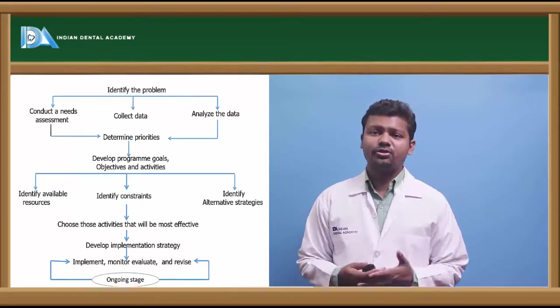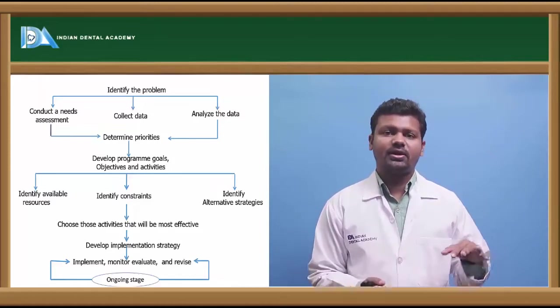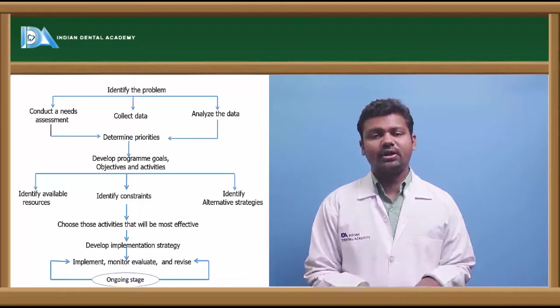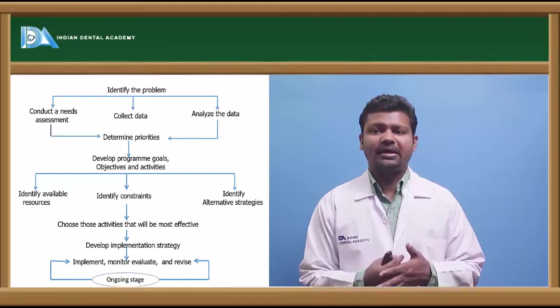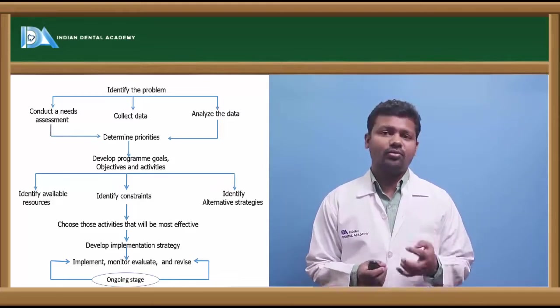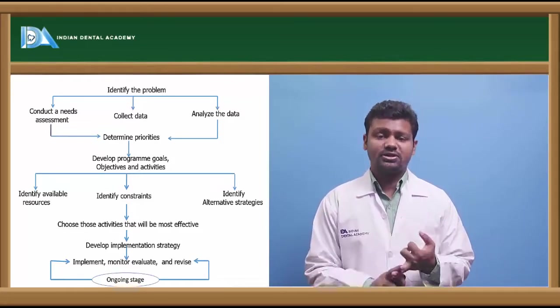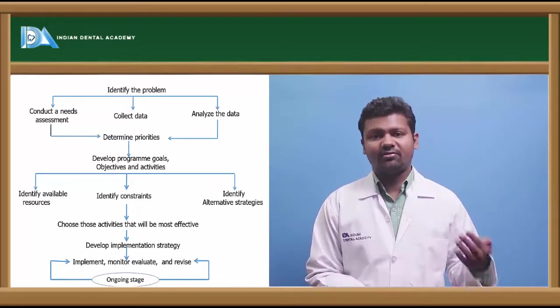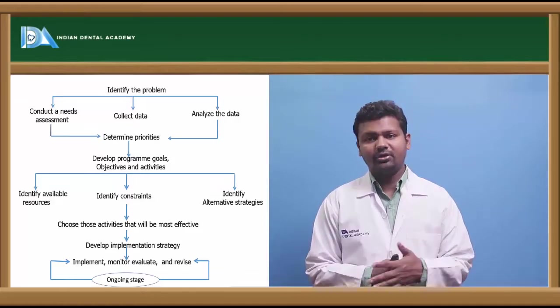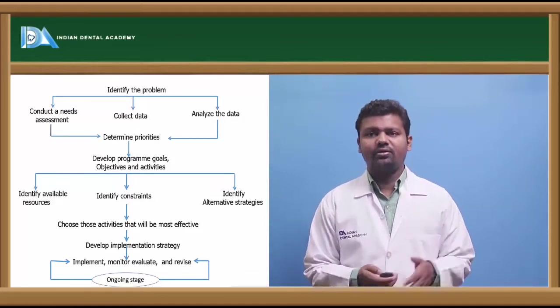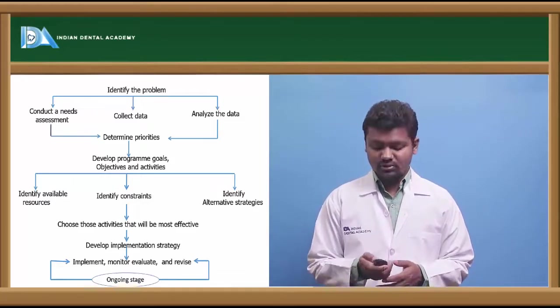Now the planning cycle includes a total few steps. These are identifying the problem. In identifying the problem there are again divided into three types: conduct a needs assessment, collect data and analyze the data. After analyzing the data we have to determine the priorities. After determining the priorities you have to develop goals, objectives and activities. After that you identify the available resources, identify the constraints and identify the alternative strategy. After that do an implementation strategy, implementation and then evaluation and monitoring. And again you can re-monitor or re-evaluate the things after the completion of your plan.